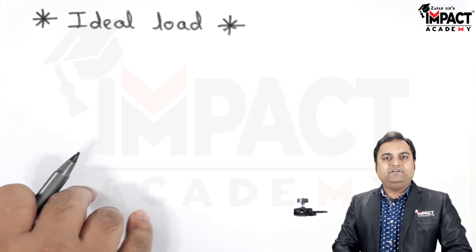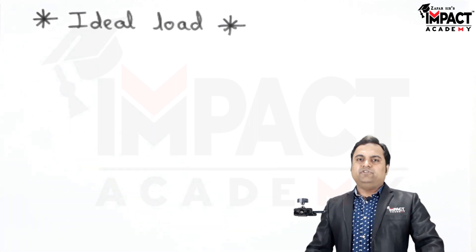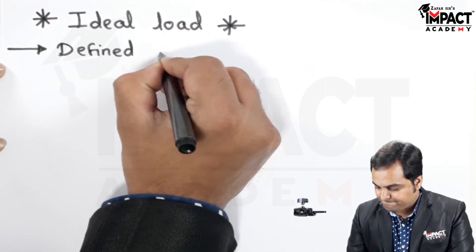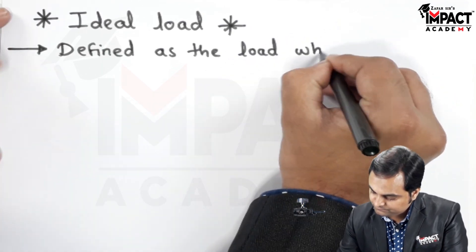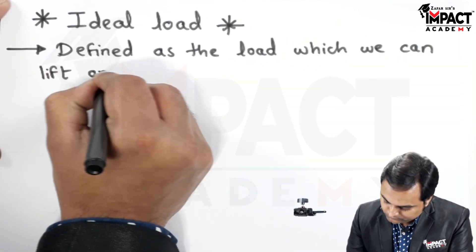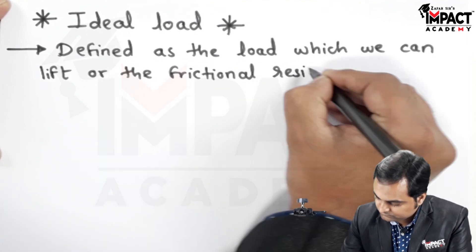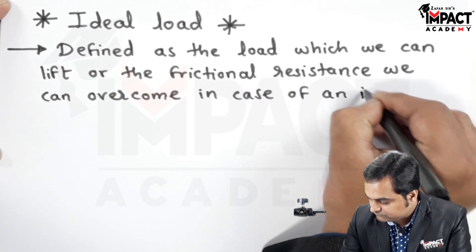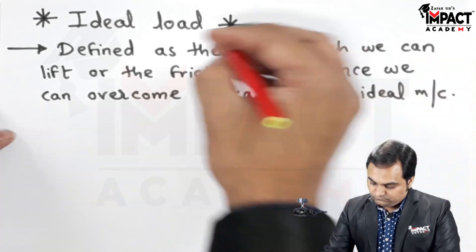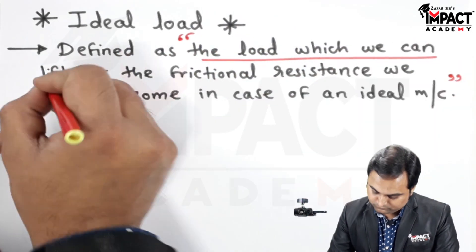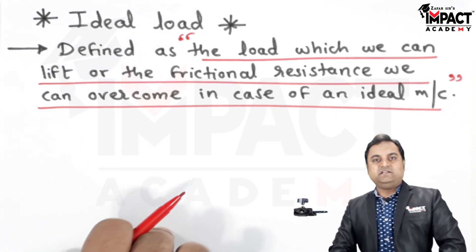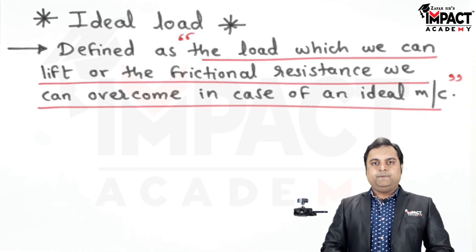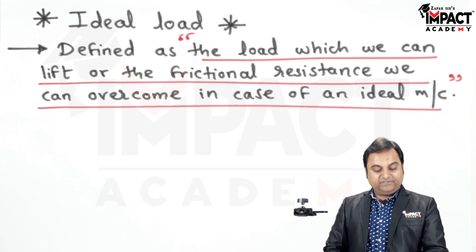Ideal load will always be present in case of an ideal machine in which the friction is absent. It is defined as the load which we can lift or the frictional resistance which we can overcome in case of an ideal machine. Ideal load would always be present in an ideal machine.